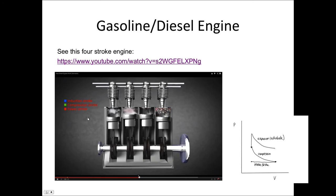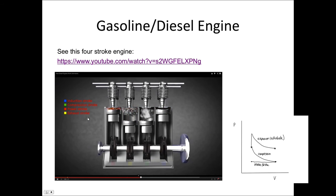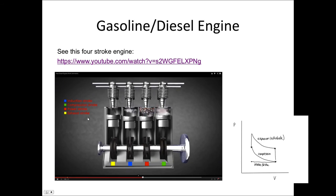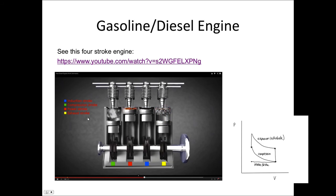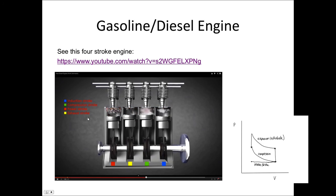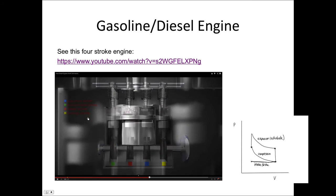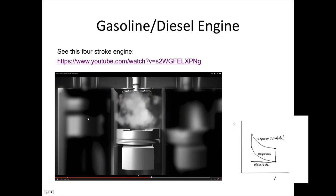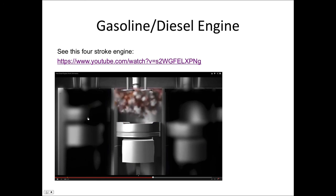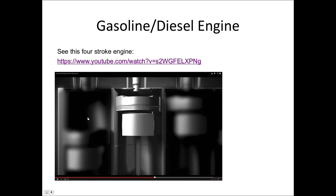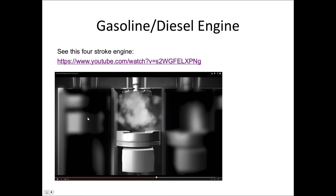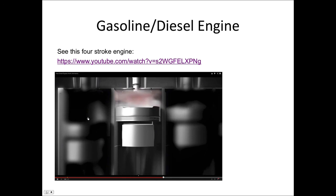At that point, the exhaust valves open, so the pressure drops to the external pressure, and the cylinder is then compressed again in order to get rid of all the excess gas inside the cylinder. The engine has four strokes to ensure that one of those pistons is always undergoing the expansion — i.e., one of them can always provide the work to keep the shaft turning.